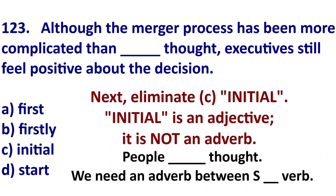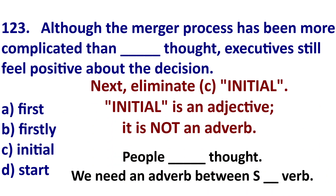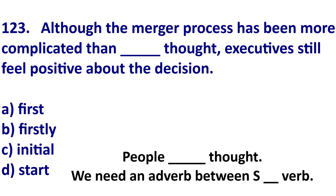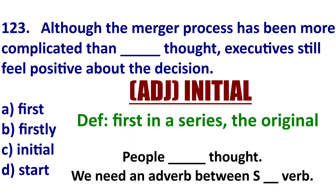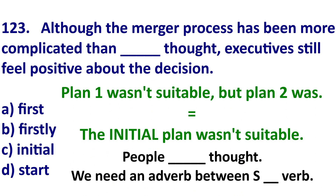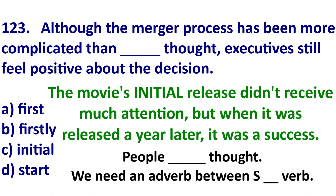Then next, remove C: 'initial.' Initial is an adjective. Initial means the original or first in a series of events. For example: plan one was not suitable, but plan two was — the initial plan was not suitable. Notice it is an adjective. The first plan was not suitable, but the second plan worked well. Or: the movie's initial release did not receive much attention, but when it was released a year later, it was a big success.